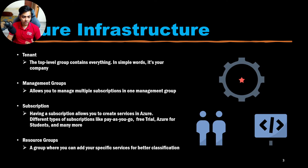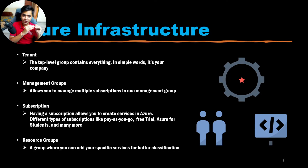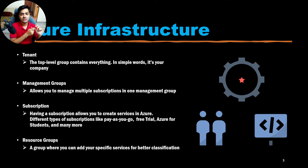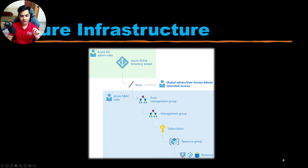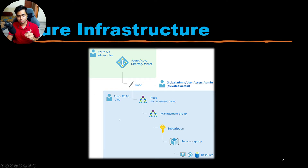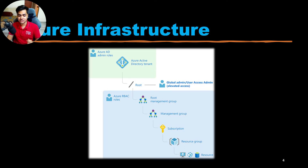Then we have resource groups, which is the last layer and contains all your services. A resource group contains all your different services, and there can be multiple resource groups — for example, resource group VM, database, storage, and so on. In the diagram, you can see we have a root management group, an active directory tenant with different AD roles, and within the resource manager there are different RBAC roles — role-based access control. The hierarchy flows from root management group → child group → subscription → resource group → services.